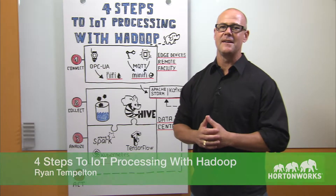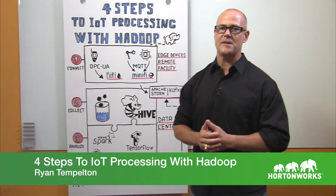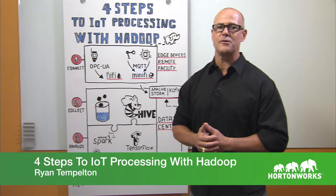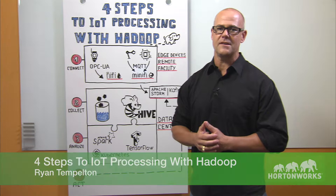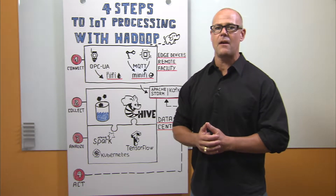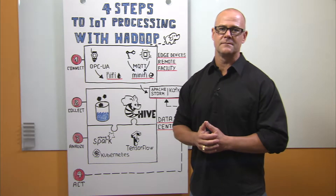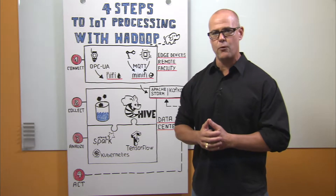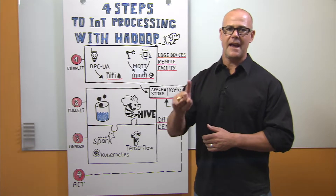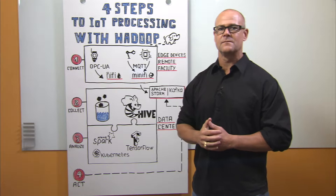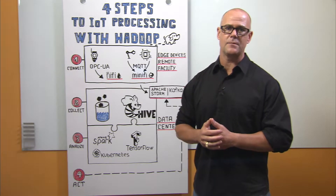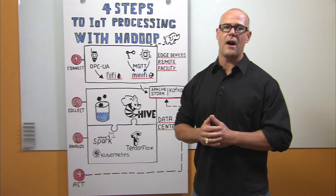Hi, my name is Ryan Templeton and I'm a Senior Solutions Engineer specializing in IoT. There's a lot of talk these days about the promise of IoT and how companies can use IoT data to realize new market opportunities as well as cost savings. The promise is definitely there, but understanding how all this works can be complex. I want to take the next few minutes to help break this down and explain how this can be tackled in four easy steps: connect, collect, analyze, act. We will look at the details of each of these steps and also the tooling that aligns to each of these steps in order to help you build your IoT architecture.